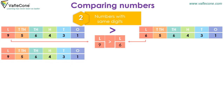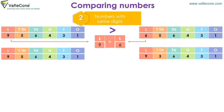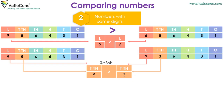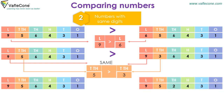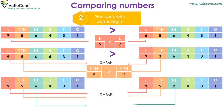9,56,431 and 9,36,431 both have the same digit in the lakhs place, so we compare digits in the ten-thousands place. Here 5 is greater than 3, so 9,56,431 is greater than 9,36,431. Similarly, 9,56,431 and 9,52,431 have the same digit in the lakhs place; comparing thousands, 6 is greater than 2, so 9,56,431 is greater than 9,52,431.